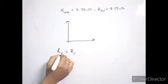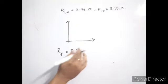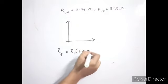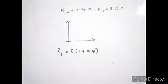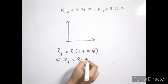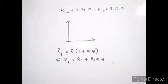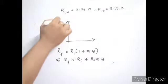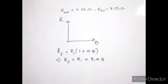The general equation is R_f equals R_i times 1 plus alpha times the change in temperature theta. Expanding: R_f equals R_i plus R_i times alpha times theta. This is a straightforward equation for the variation of resistance with temperature.